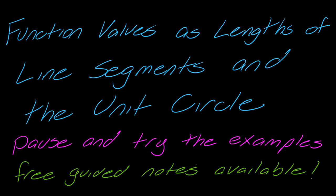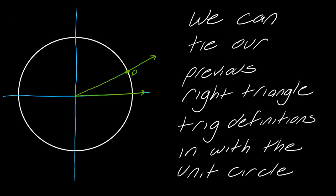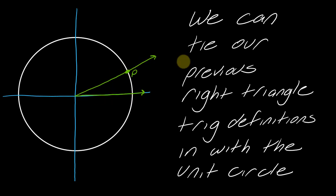We're going to talk about function values as lengths of line segments and the unit circle. You might remember we've talked about our previous right triangle trig definitions — how we have certain geometry and certain angle measures that you can tie together with line segments. The question is how does that all relate to the unit circle? So that's what we're going to address in this video.